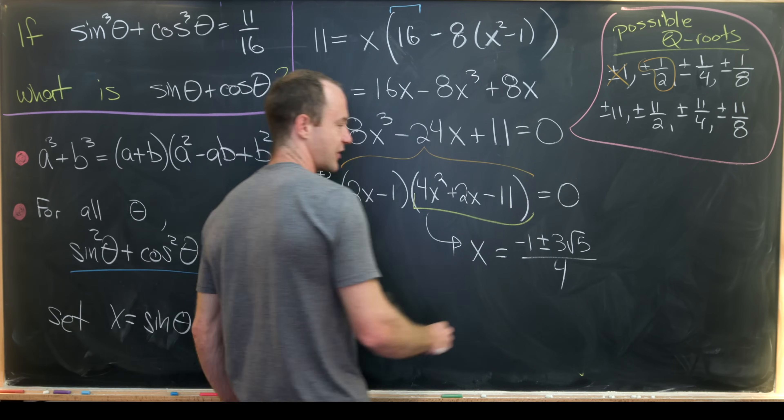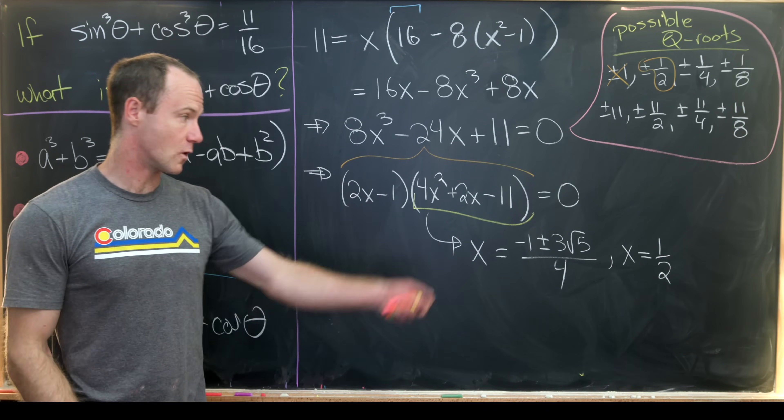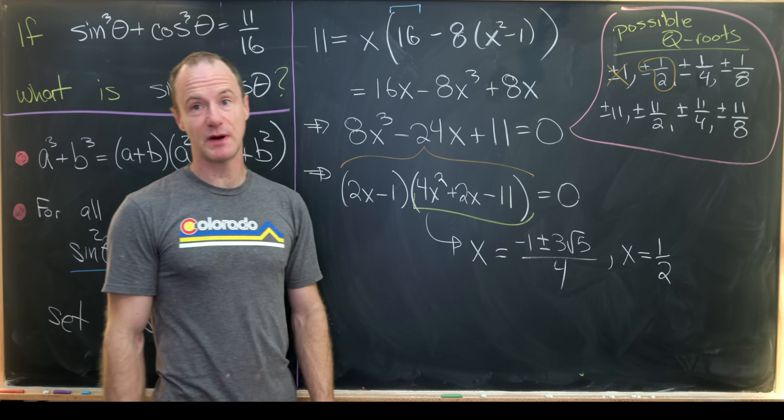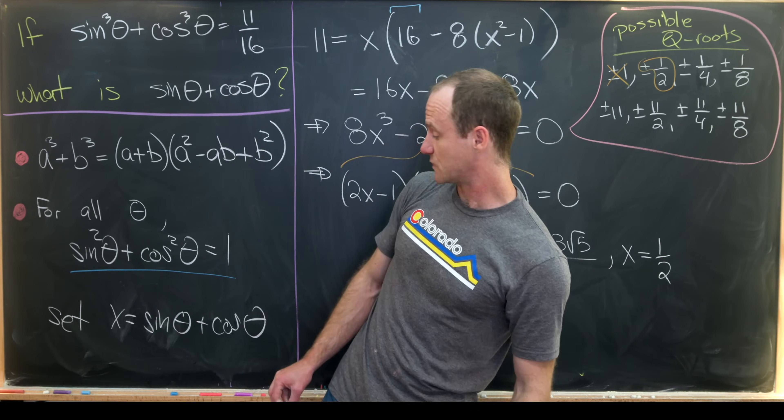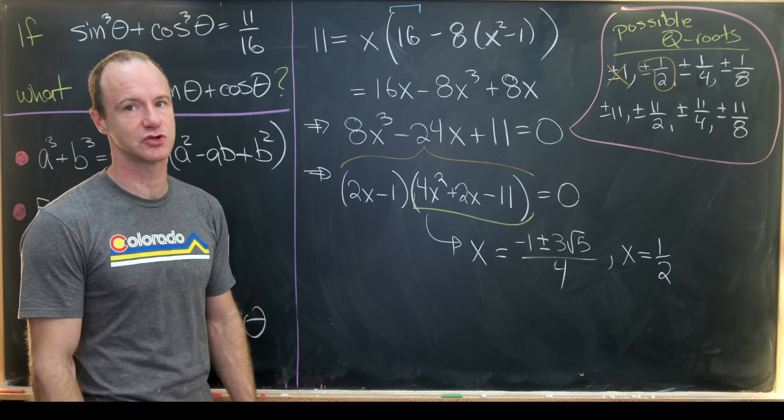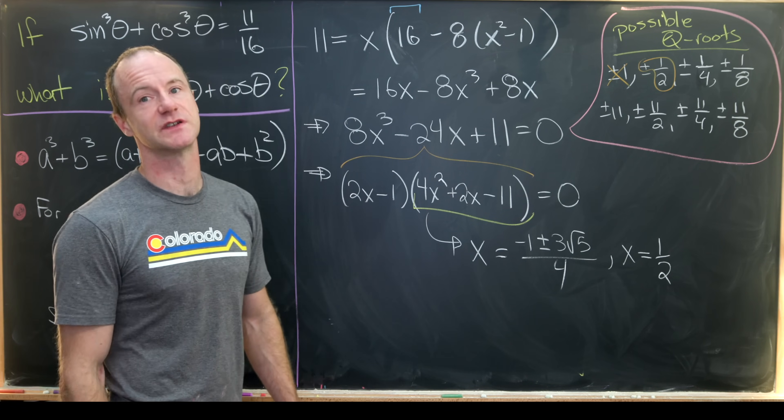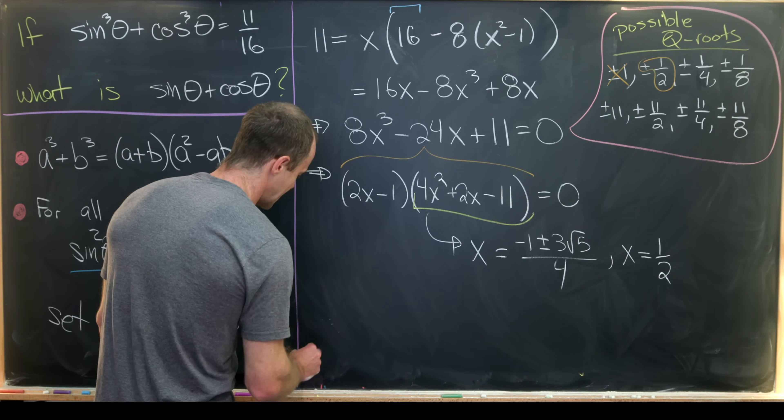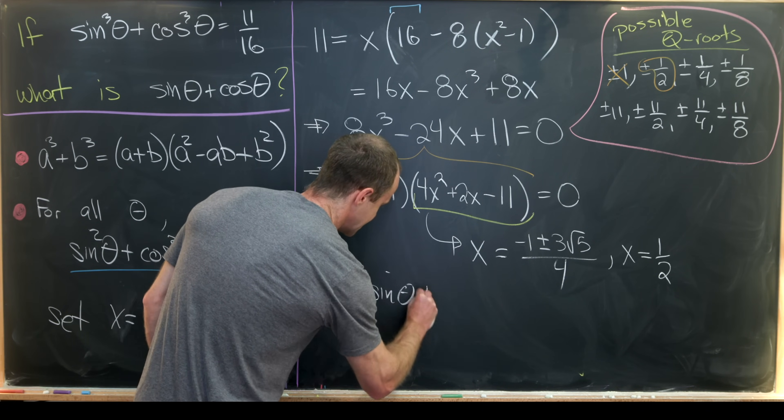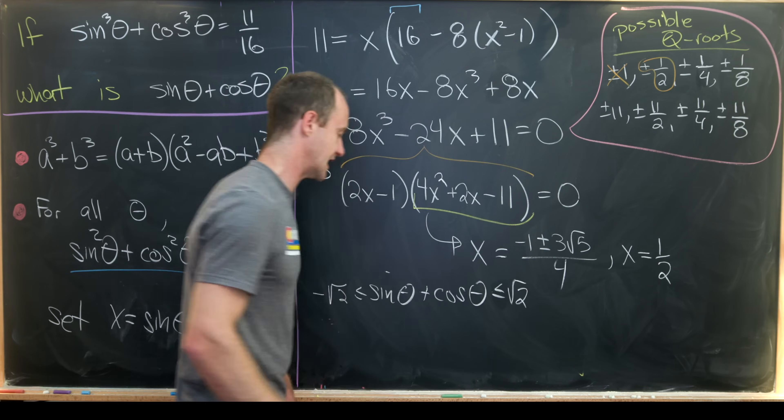So now we see that we have three possibilities. We have the possibility that x is equal to a half or x is equal to one of those irrational numbers. And you say, are all of these possible solutions? Or since x is equal to sine theta plus cosine theta, is only one or two of them a solution? Or maybe none of them a solution? And in fact, we can use the range of sine theta plus cosine theta in order to figure this out. I won't check this carefully, but sine theta plus cosine theta is strictly between the square root of 2 and negative the square root of 2.